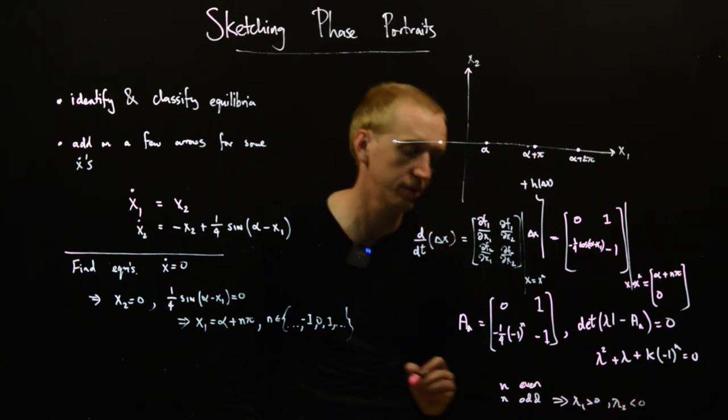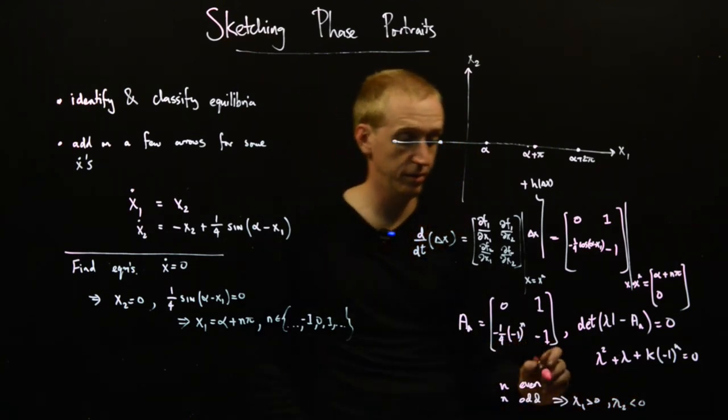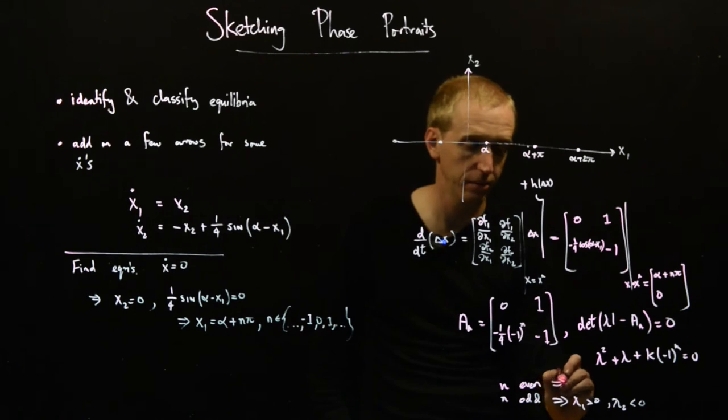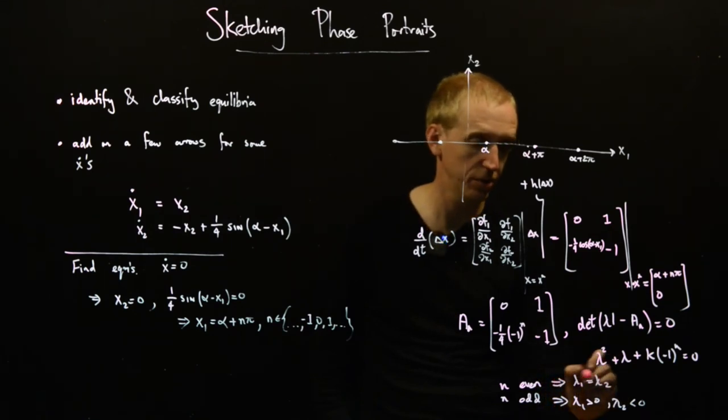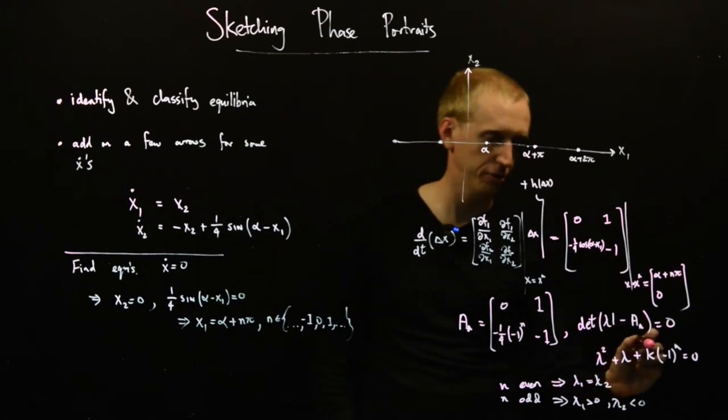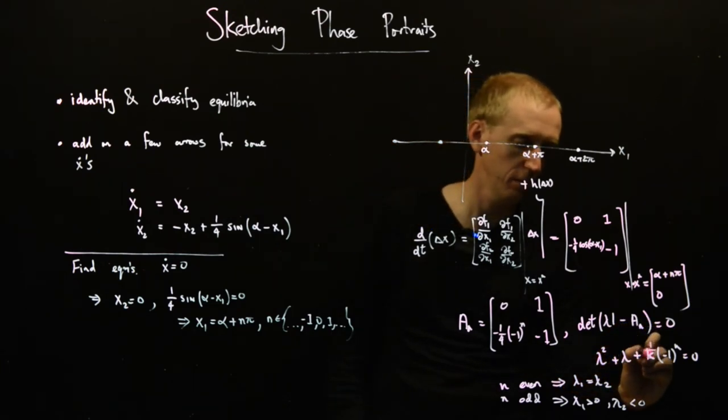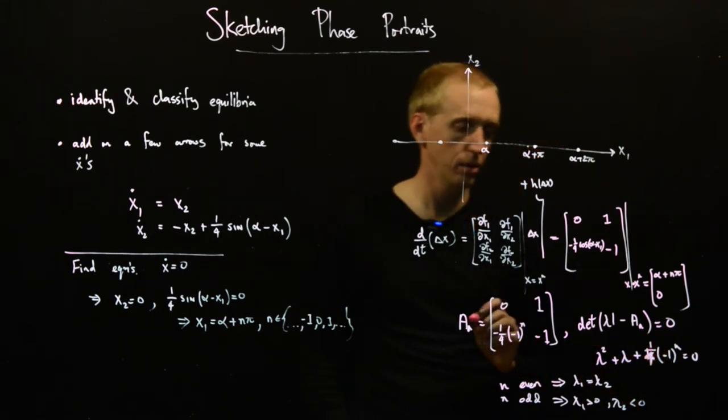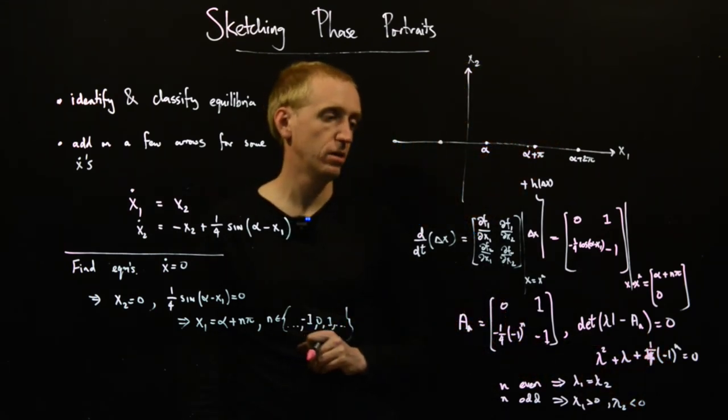Lambda 2 less than zero, and n even implies that lambda 1 is equal to lambda 2. And we can probably even guess that the eigenvalue we need is a half, sorry, this k should be a quarter.